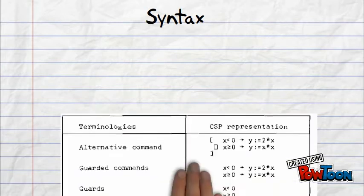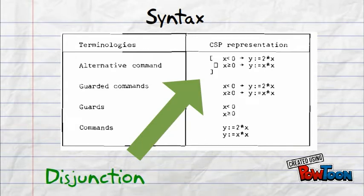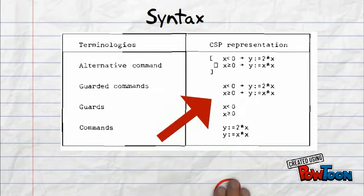It is interesting how guard commands are represented. On the first line there is an alternative command, which today is known as disjunction. Square symbol means OR. On the second line we have guard commands, left part represents guards.